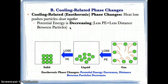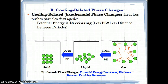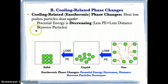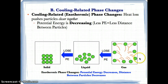Now we have the opposite: cooling-related phase changes, also known as exothermic phase changes. This is the reverse of endothermic phase changes. In exothermic or cooling-related phase changes, heat loss pushes the particles closer together. You can think of heat as what's holding the particles apart — when you lose heat, they're going to pull in and become closer together. When you lose heat, you're also losing potential energy, and as a result, less potential energy means less distance between the particles. So to summarize: if you lose heat, you lose potential energy, and if you lose potential energy, you have less distance between the particles.